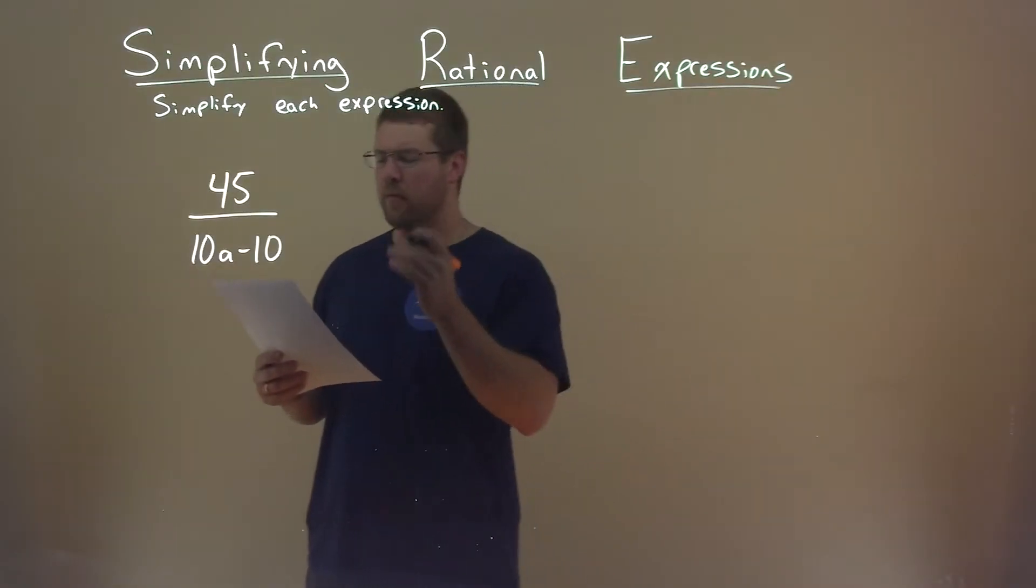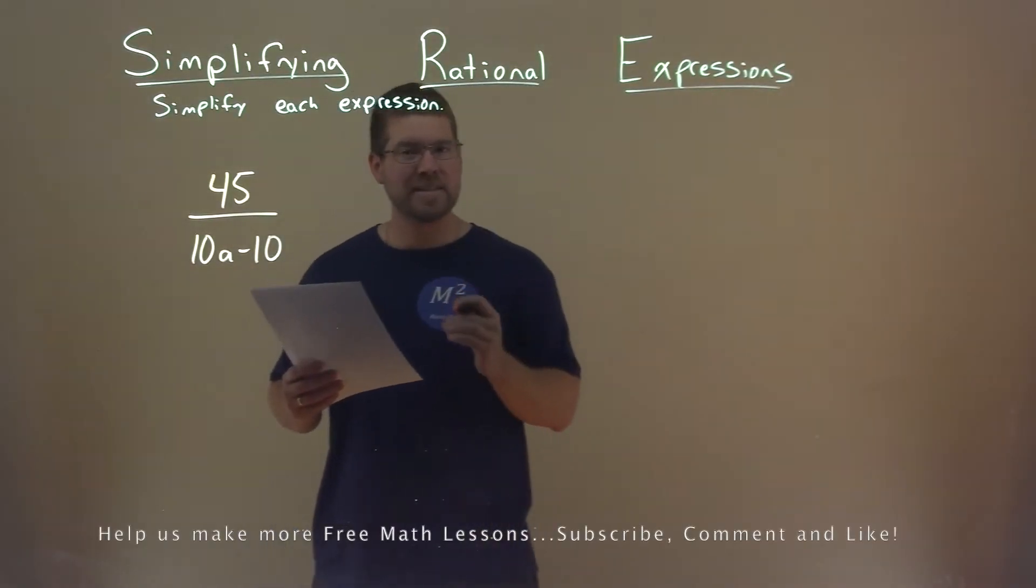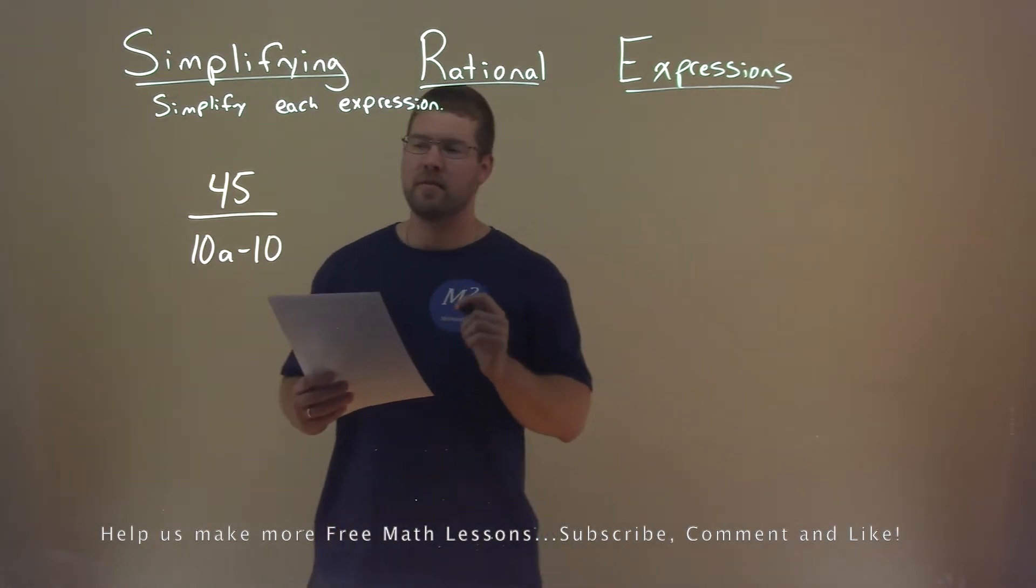We're given this problem right here, 45 over 10a minus 10, and we want to simplify this expression.